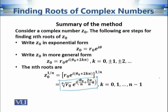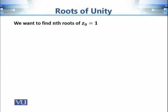The variation of k is from 0 to n minus 1, so there are exactly n nth roots of a given complex number z-naught. Next we study a very important example: the nth roots of unity, where our given complex number is 1.